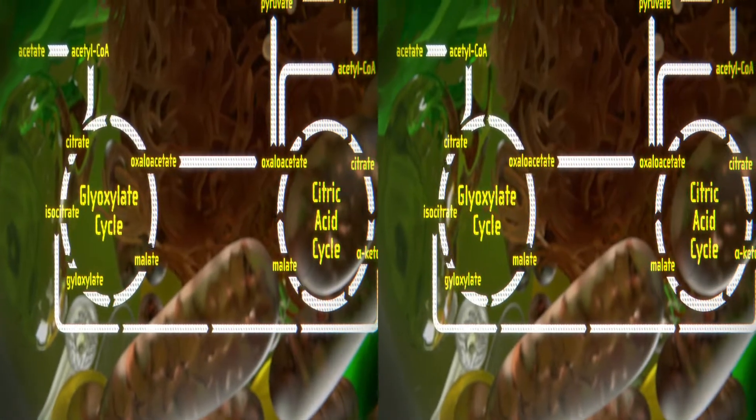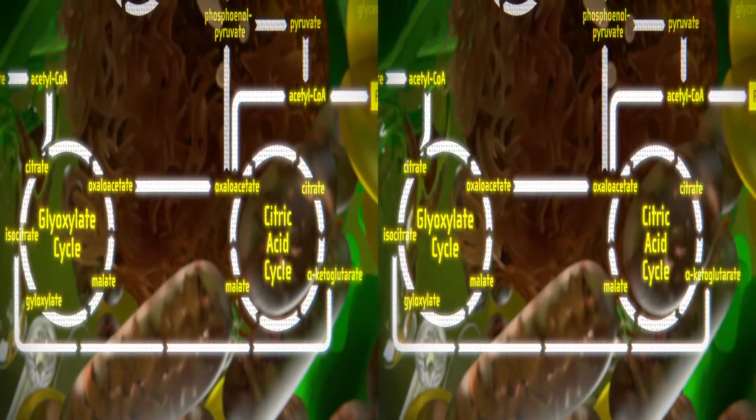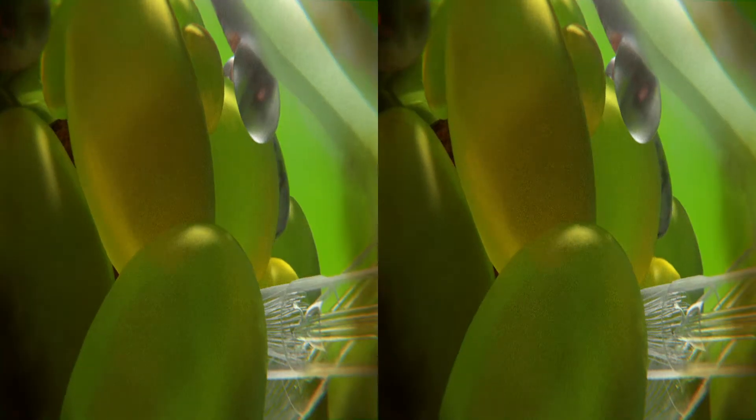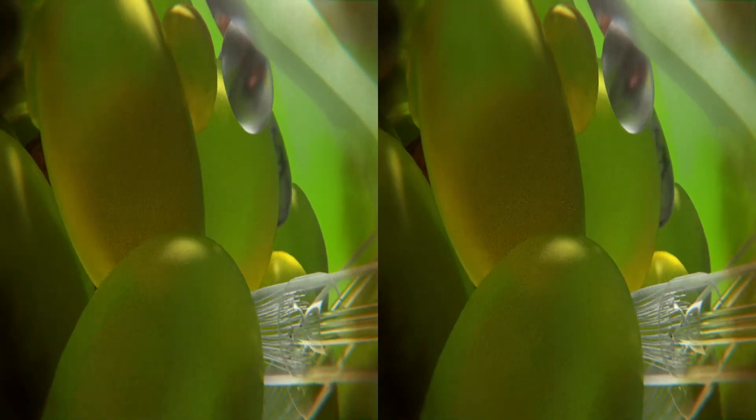In return, acetate is mainly used for the accumulation of neutral lipids as typical storage products under stress. Due to the inhibition of photosynthesis, chlorophyll molecules are degraded.